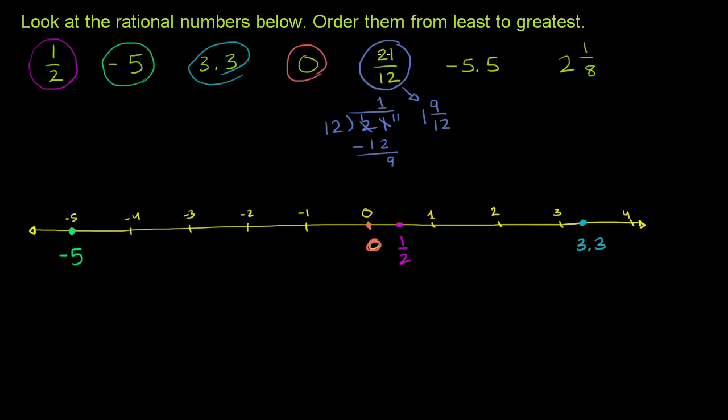So 1 and 9 twelfths, we can also write that. Actually, we could have simplified this right from the get-go, because both 21 and 12 are divisible by 3. But now we can simplify 9 twelfths. Divide both the numerator and the denominator by 3. We then get 1 and 3 over 4. 1 and 3-fourths. And just to make it clear, I could have simplified this right from the get-go.